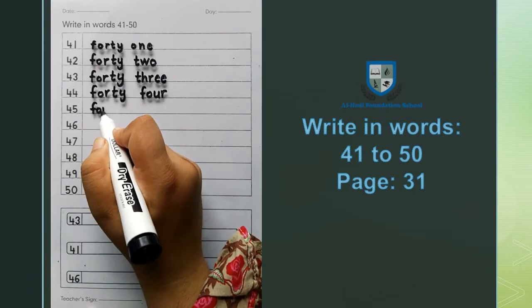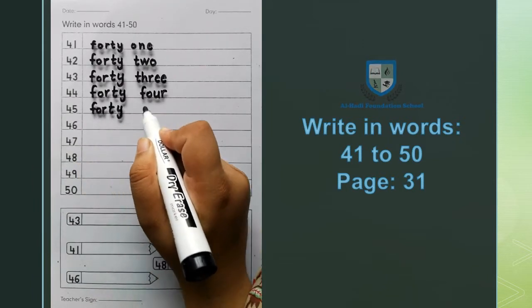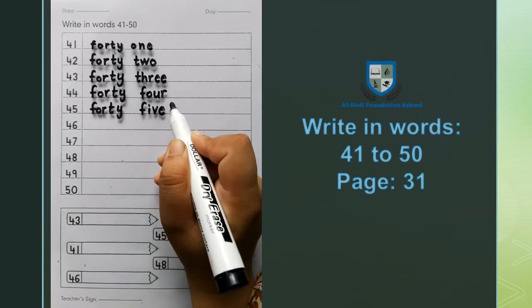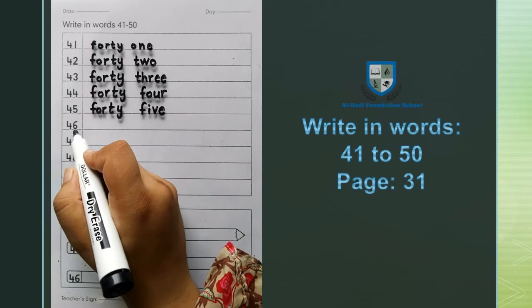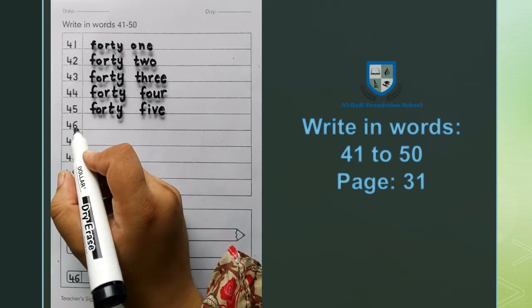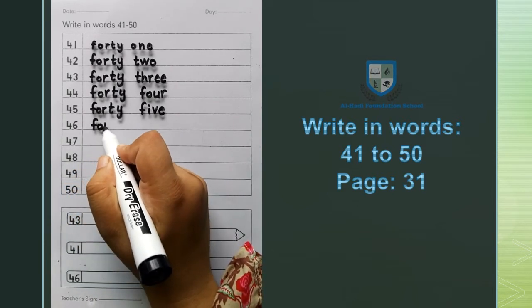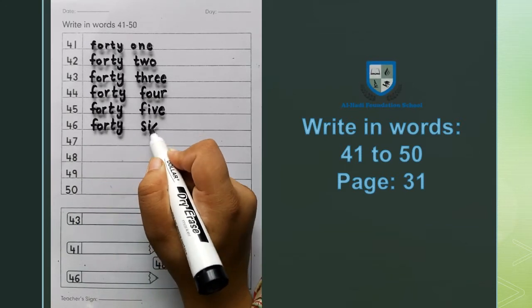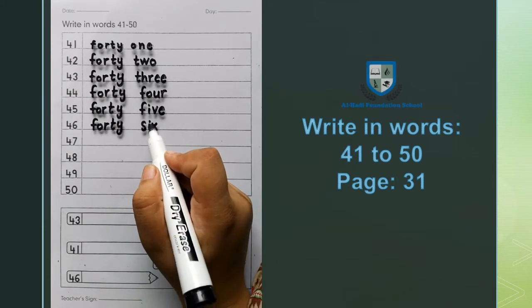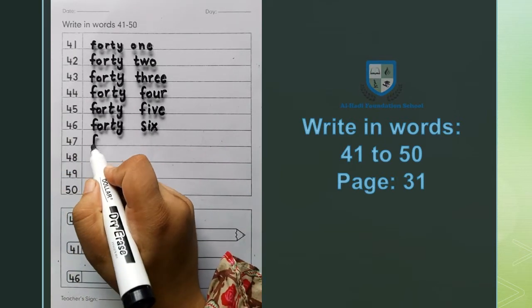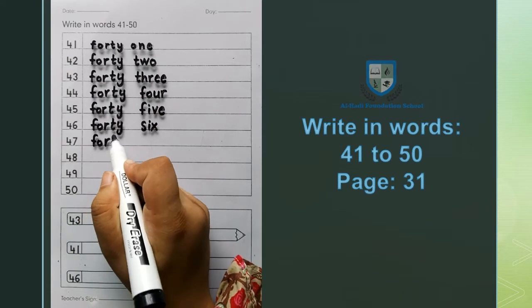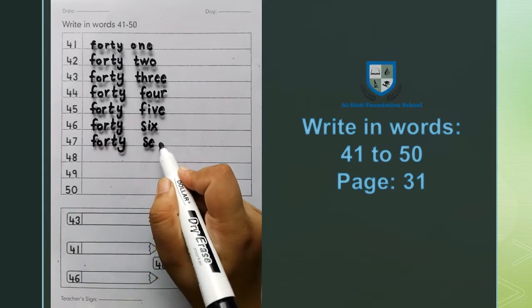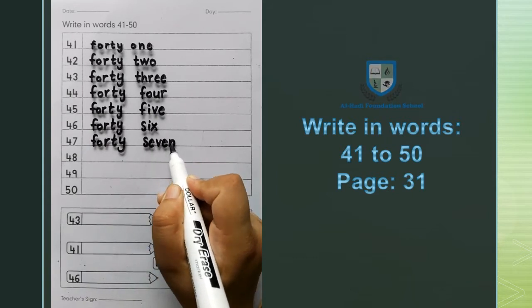45: F O R T Y, forty, F I V E, five, forty five. Next 46: F O R T Y, forty, S I X, six, forty six. Next 47: F O R T Y, forty, S E V E N, seven, forty seven.